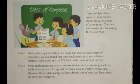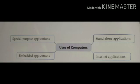In this chapter, Tejas and Jyoti have collected information about various uses of a computer. While gathering information, they found out there are many types of computers. They also came to know that some applications such as email need internet, while others such as MS Paint can be used without internet. Some applications are used to control devices such as washing machines, while some are used for special purposes such as weather forecasting. Based on these relationships, they drew a mind map and came up with 4 categories of uses of a computer.